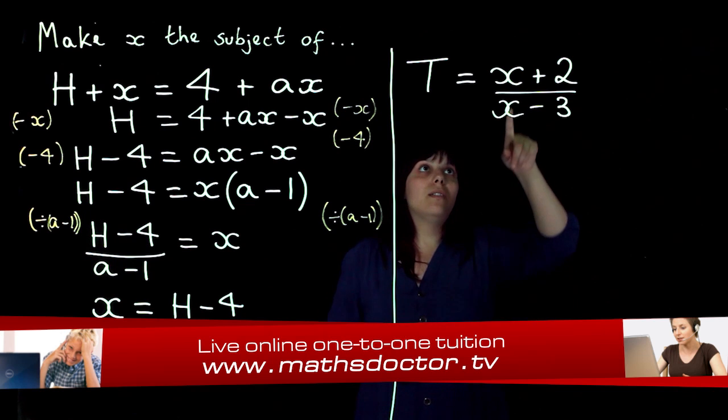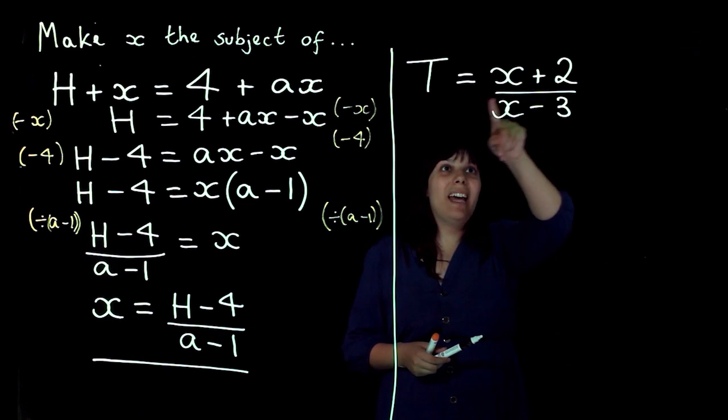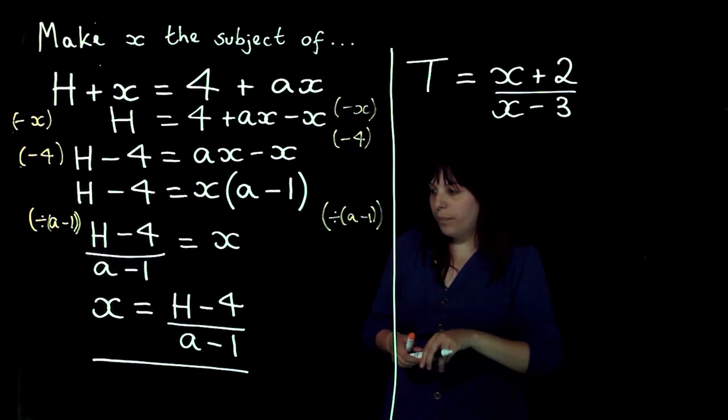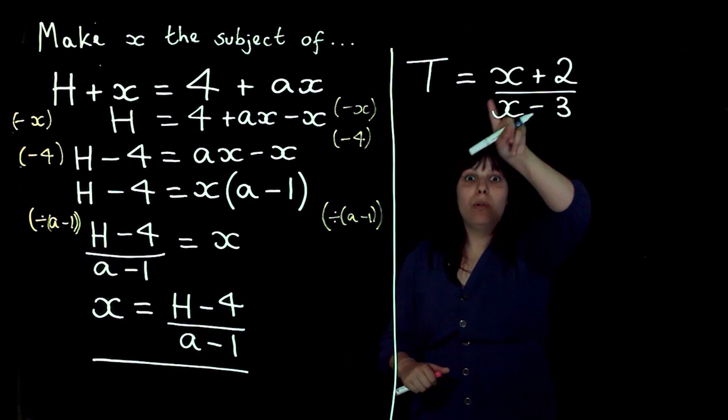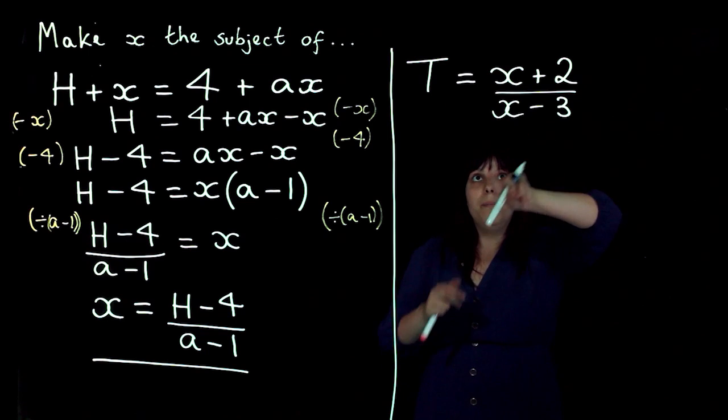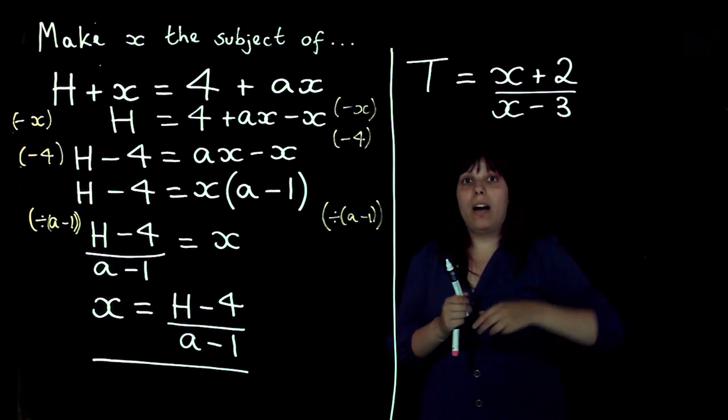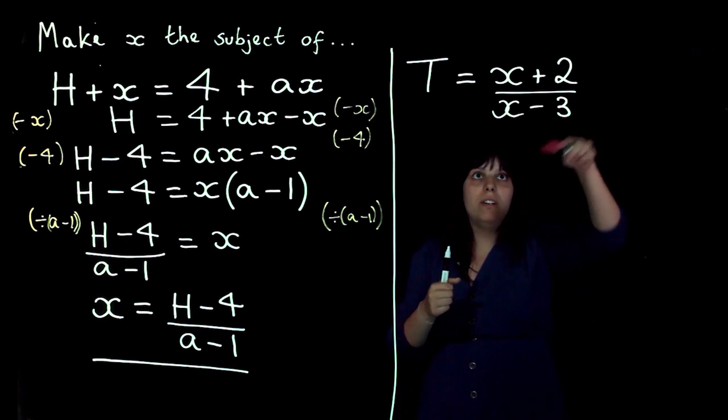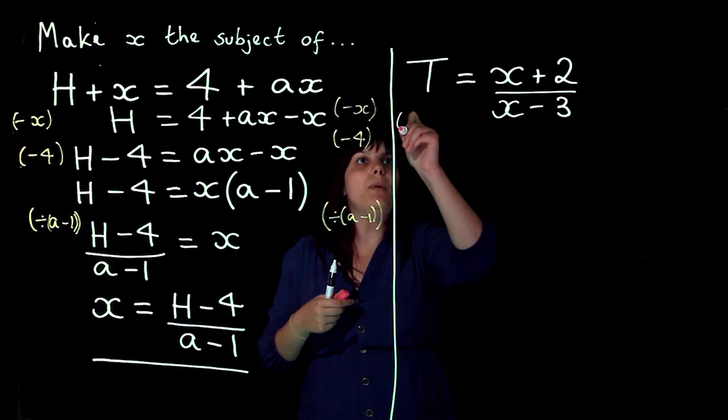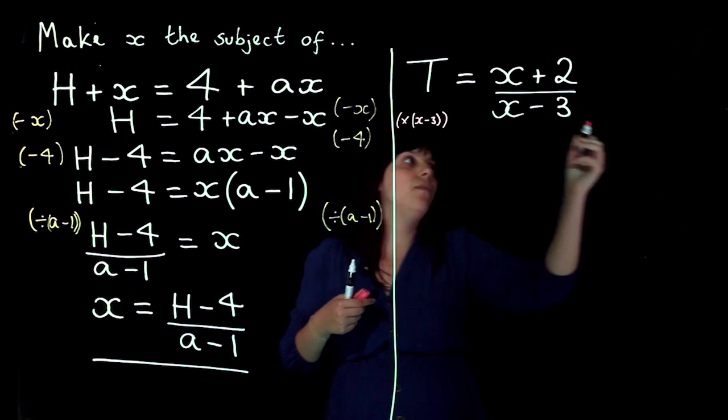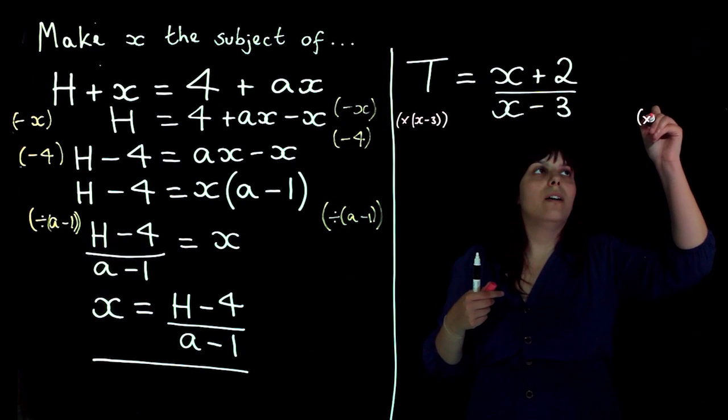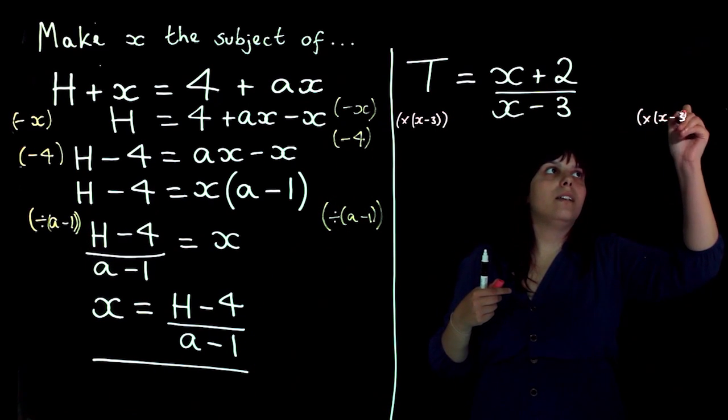But I've got a problem because at the moment I've got x in the denominator of the fraction. So what I'm going to do is multiply by that denominator so I end up without a fraction because I'm currently dividing by it. So if I multiply both sides by x minus 3, hopefully that will get rid of my denominator.